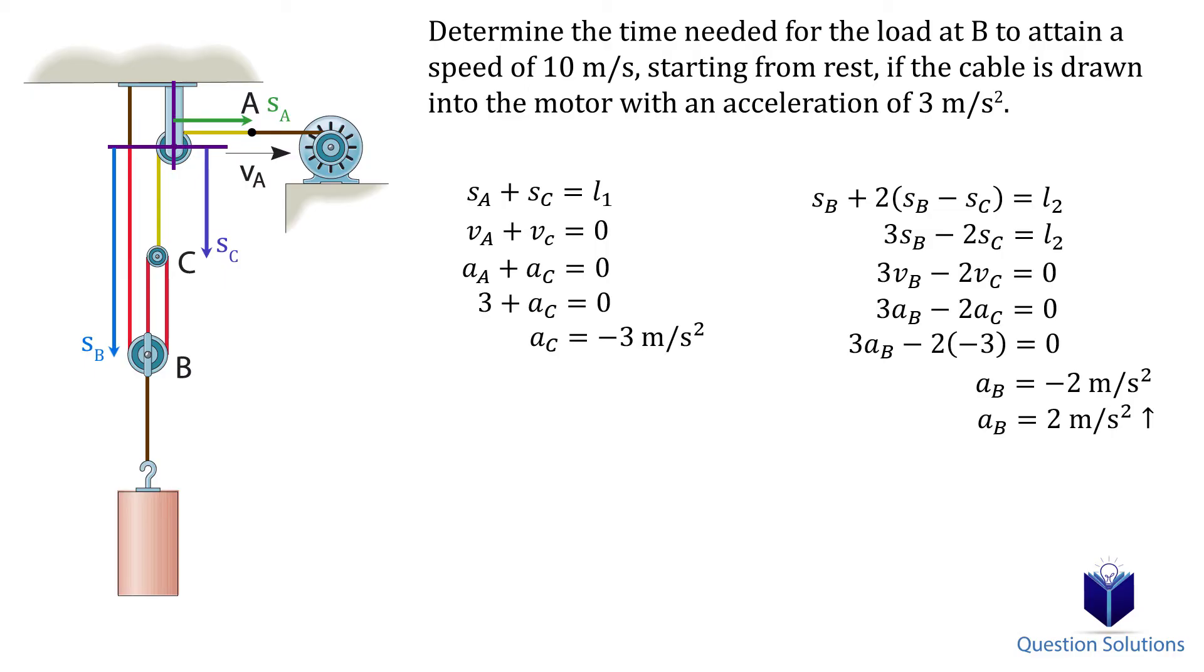To find the time, all we need to do is use one of the equations from the kinematics chapter. The velocity starts from 0 m/s and attains a speed of 10 m/s. Plugging those in along with the acceleration we just found gives us a time of 5 seconds.